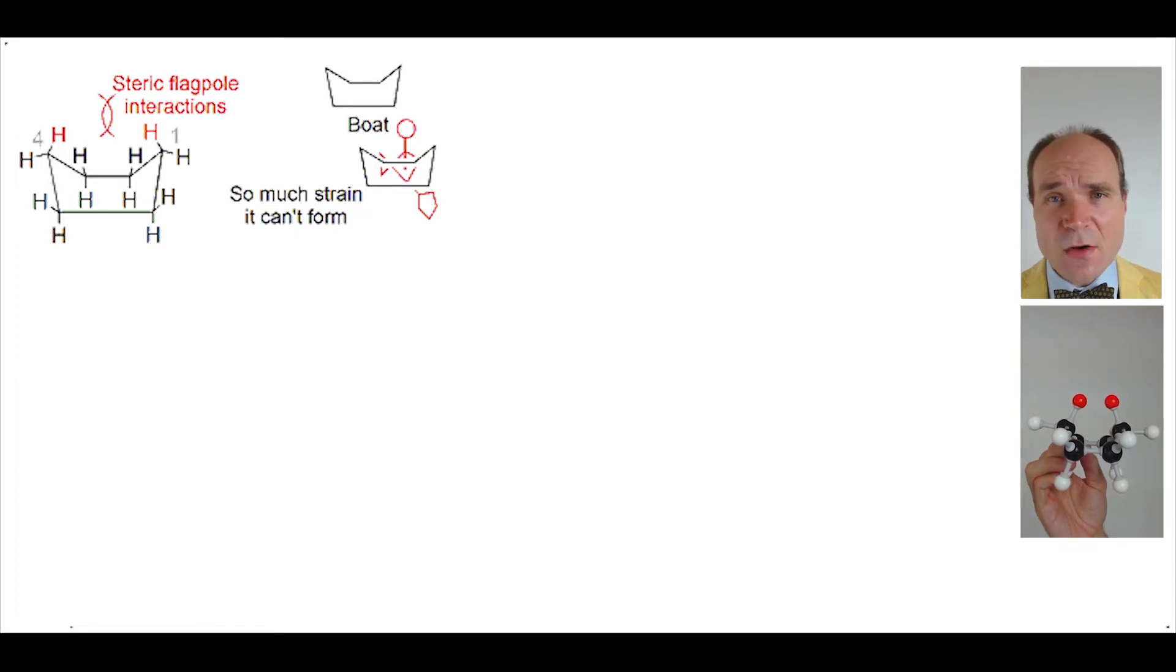Another term is trans-annular strain. Trans meaning across, annular meaning ring. The hydrogens are pointing across the ring towards the middle of the ring. Whatever you call it, they come too close to each other. You have a steric interaction that causes extra energy.